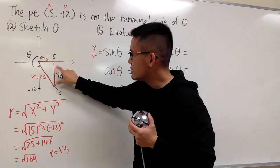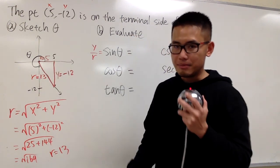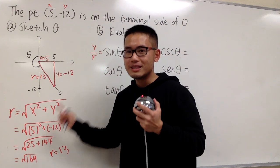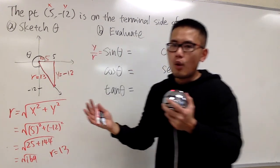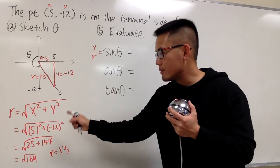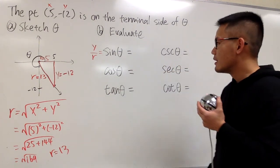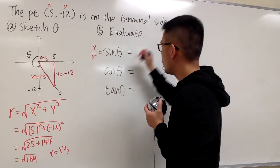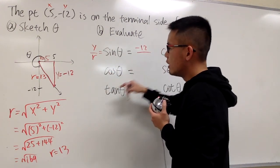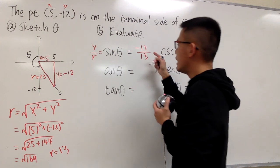From here, it's the opposite, and the hypotenuse is 13. And by the way, r is always positive. Keep that in mind. x and y, of course, can be negative or positive, but r is always positive. Anyways, sin theta is y over r, which we have negative 12 over r is 13. And that's it.